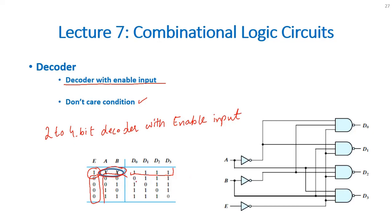For 0 0, D0 will be 0, all other inputs will remain 1. For 0 1, D1 will remain 0, all other inputs will remain 1.